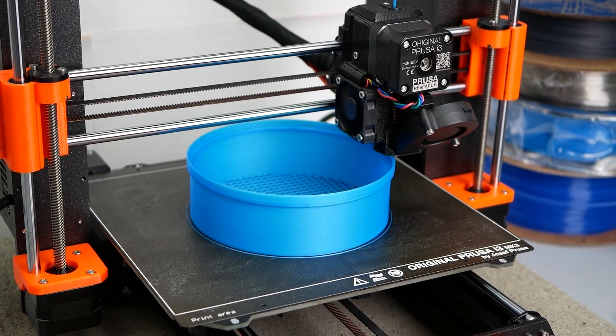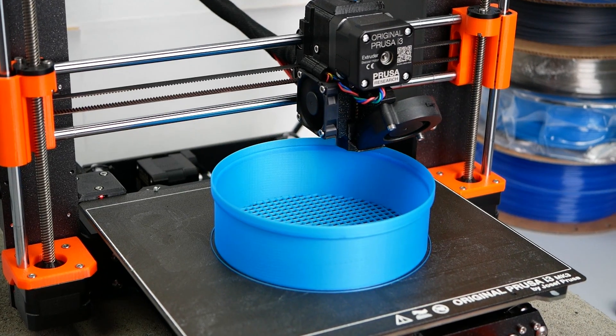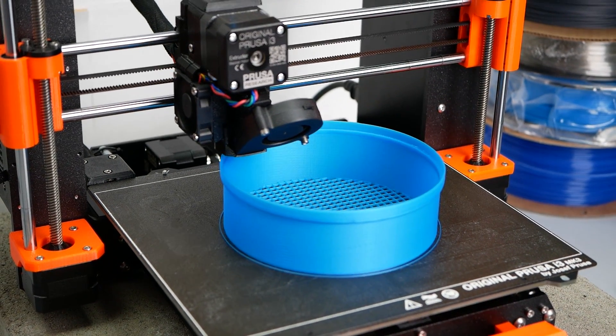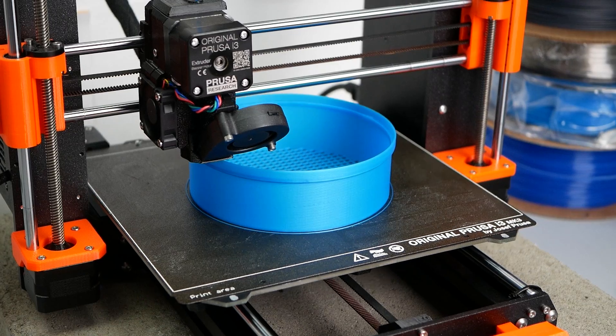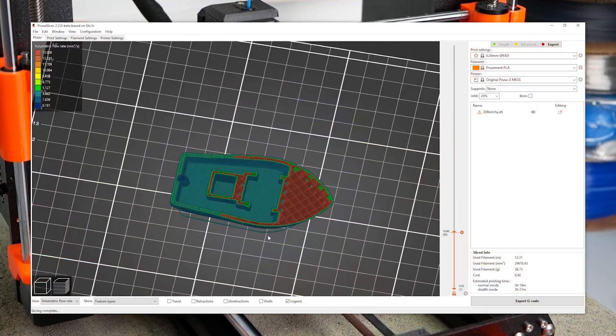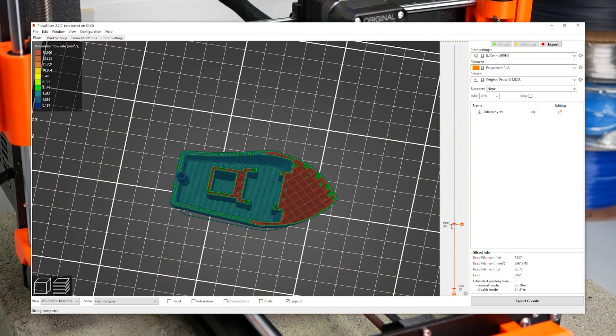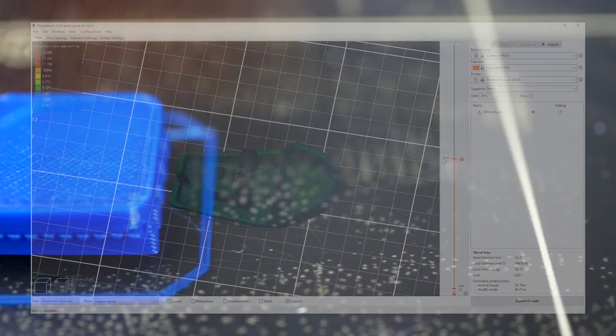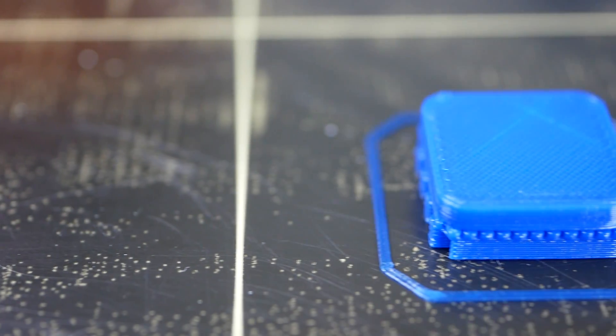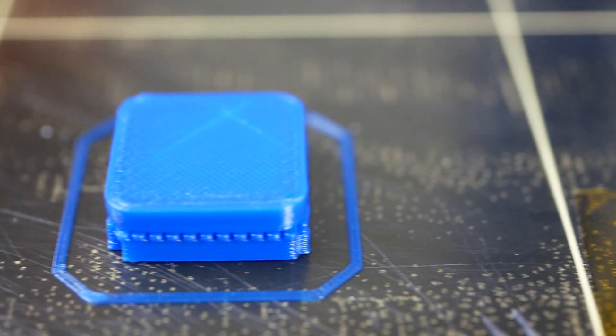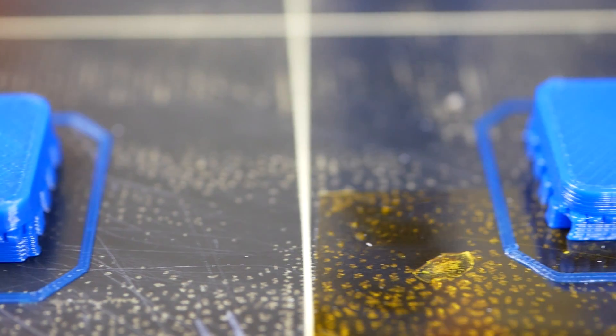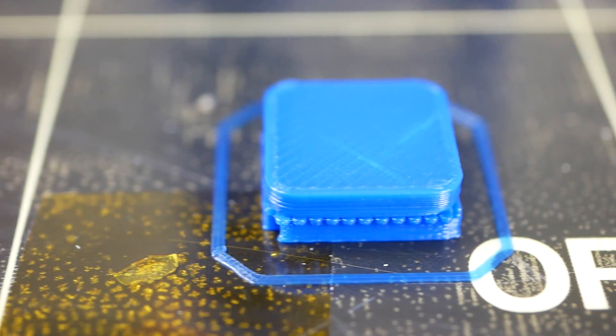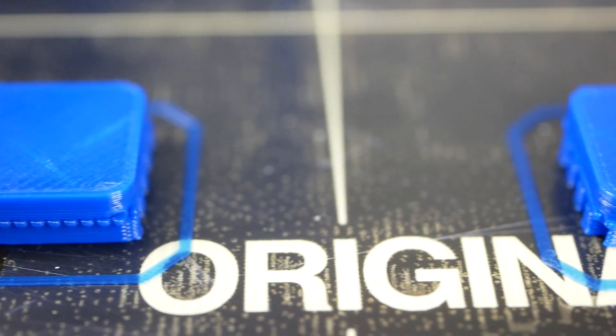Maybe a flow rate dependent extrusion multiplier might be something really useful in a slicer. This might help to increase the dimensional accuracy of prints where the infill is printed with significantly higher speeds than the perimeters because I usually set the flow rate when looking at an infill surface but that might mean that I overextrude a couple of percent at perimeters that are for example printed at half the speed.